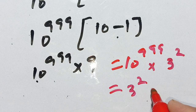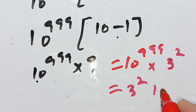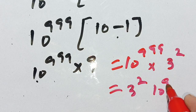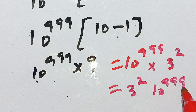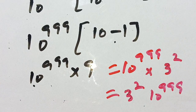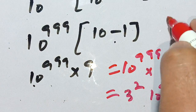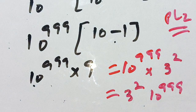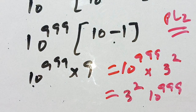Thus our result is equal to 3 raised to power 2 times 10 raised to power 999 in simplest form. If you are new here, make sure to subscribe to our channel for more informative videos. See you in the next video, bye!